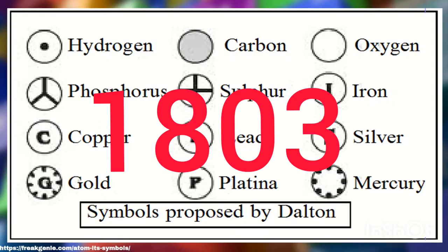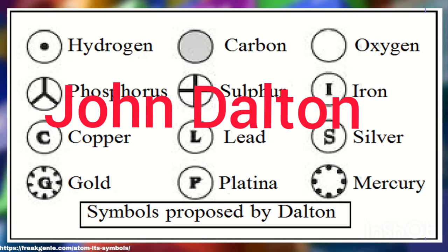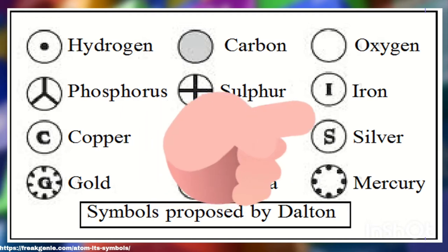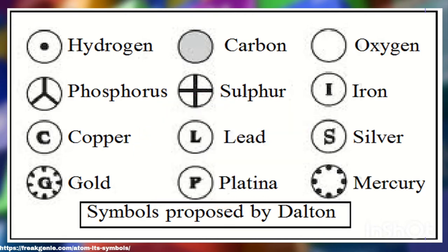It was in 1803 when English chemist-physicist John Dalton started the use of symbols in representing the atoms of different elements. As you can see in the figure, elements were presented differently from the ones we are using today. Notice that the symbols for iron and silver are I and S, respectively. Dalton also assigned the relative weights of the elements, with hydrogen as the lightest and mercury as the heaviest.